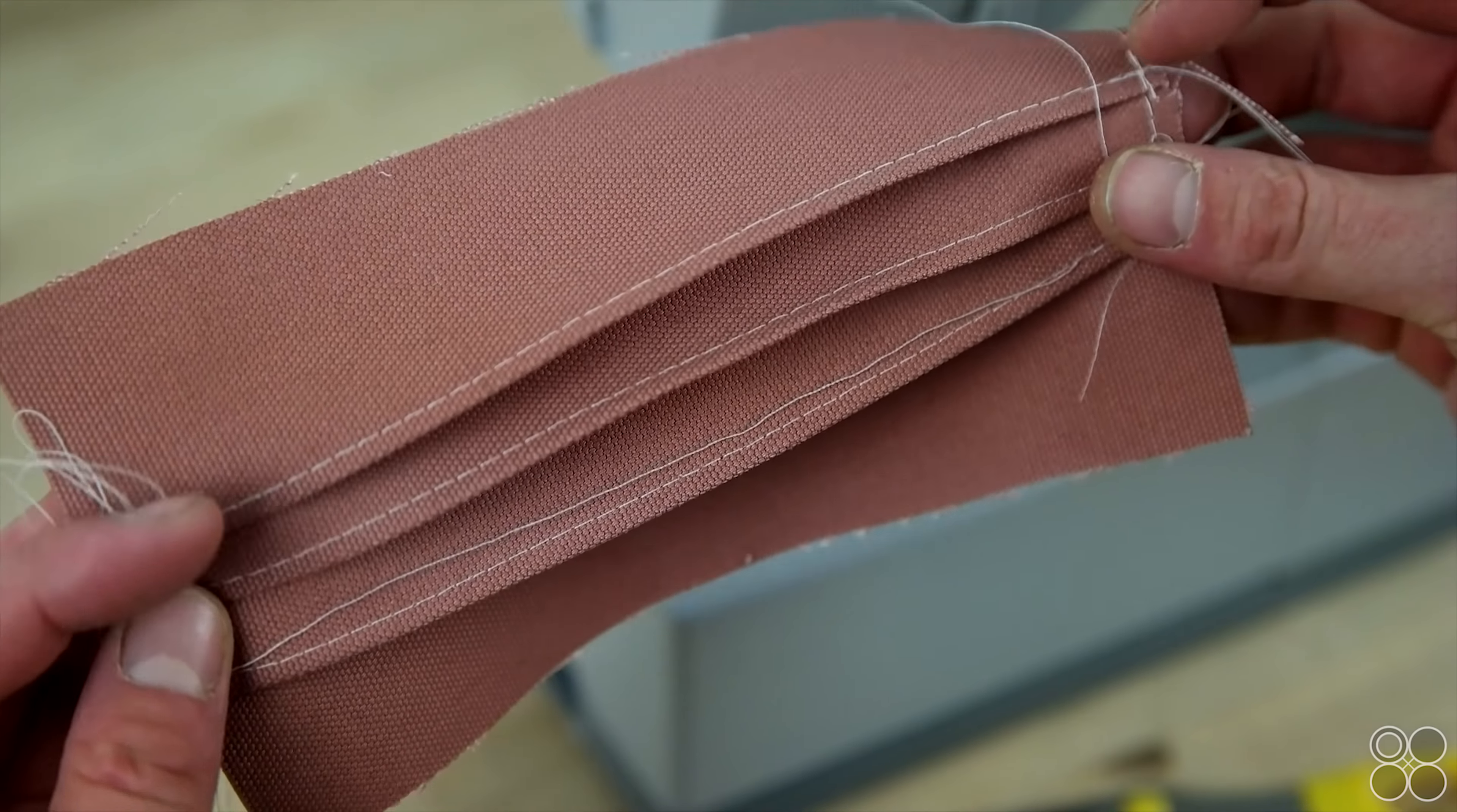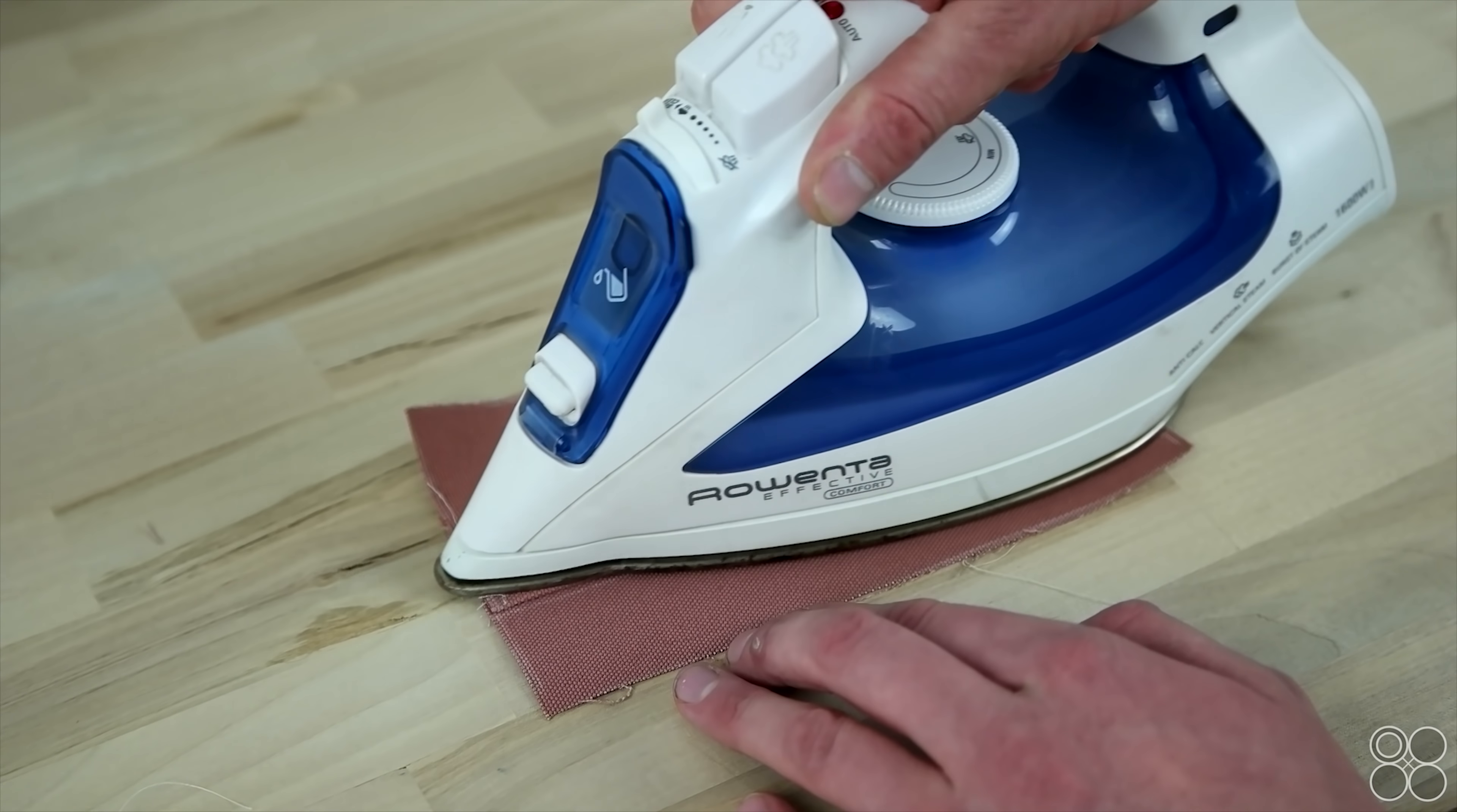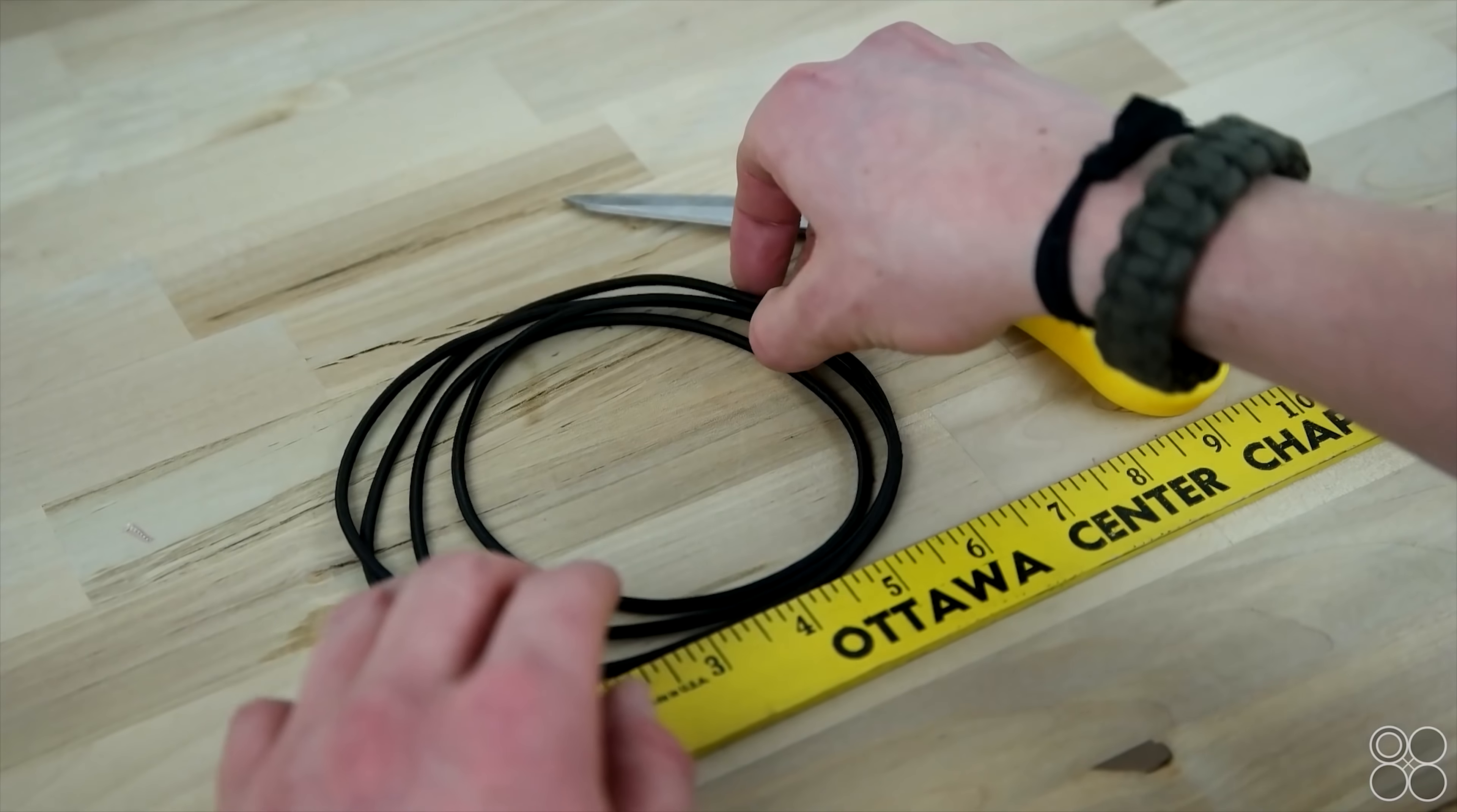So as you can see there's chalk lines and a quick tip for getting out chalk lines just take the same fabric and rub them together and it generally takes out all that chalk. So now we're going to go ahead and iron the folds down and this just makes it a little more crisp in the end when you're using a heavier weight fabric.